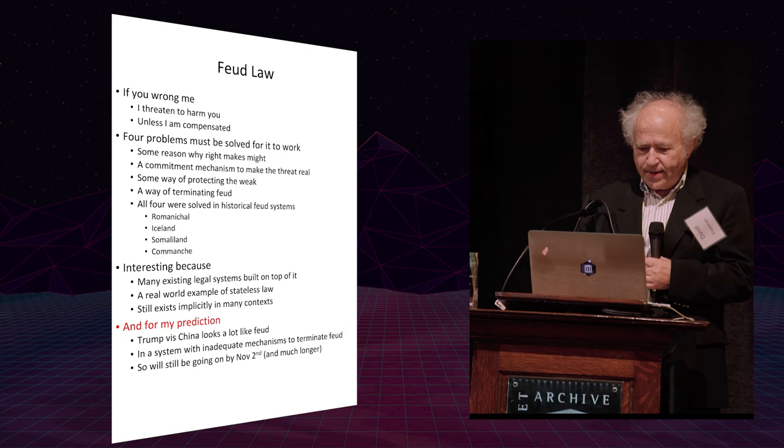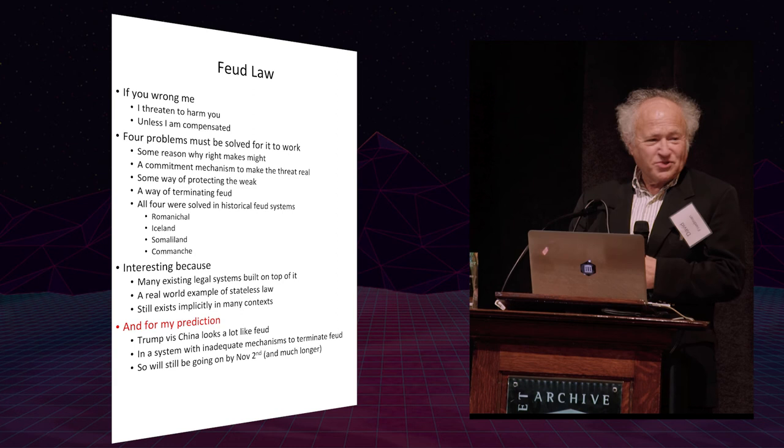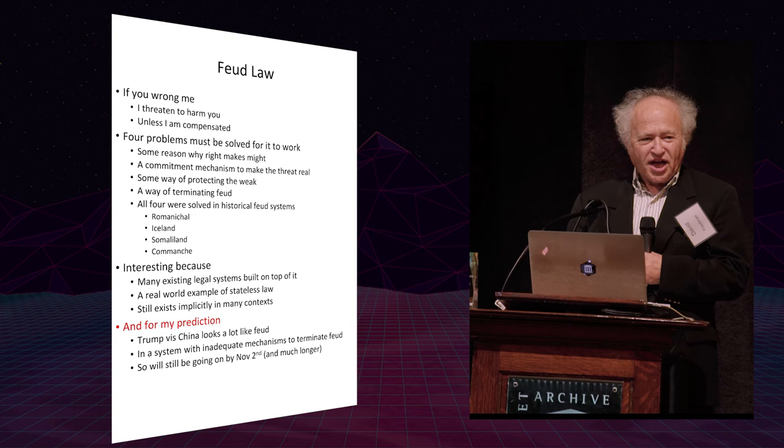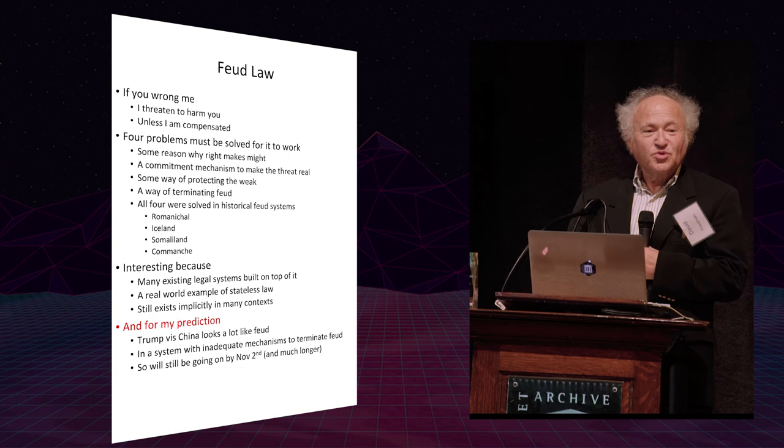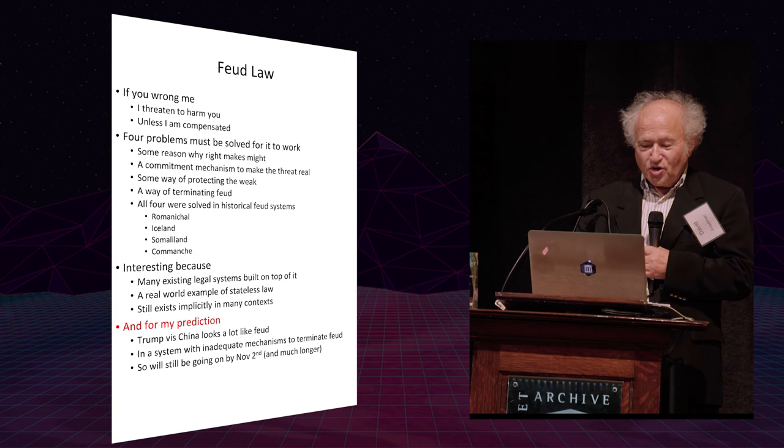And for my prediction, since they insisted on a prediction, which I didn't want to offer because this isn't really prediction stuff, it is that Trump's interaction with China over trade looks an awful lot like feud in a system with inadequate mechanisms to terminate feud, no equivalent of the arbitrator, and therefore it will still be going on by November the 2nd of next year and possibly longer. Thank you.